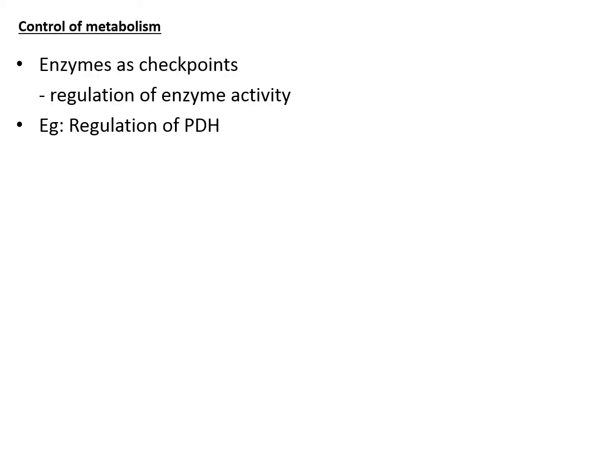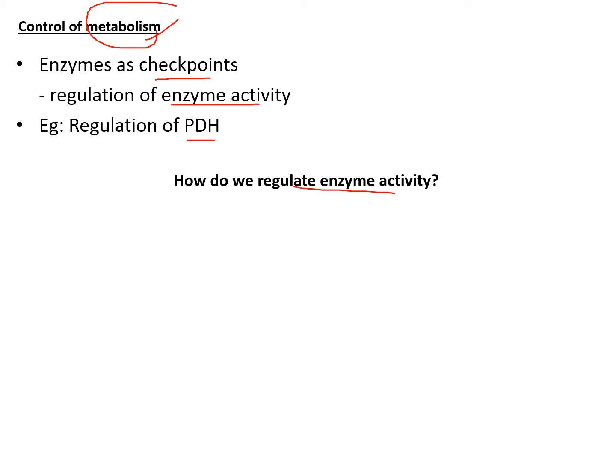In the control of metabolism, enzymes are used as checkpoints by regulating their activity. PDH is just one example — there are many more enzymes whose activities can be regulated in metabolic control. The question is: how do we regulate enzyme activity?